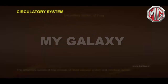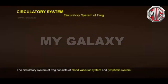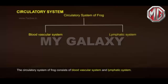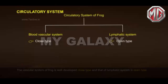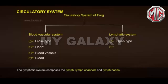Circulatory System: The circulatory system of frog consists of a blood vascular system and a lymphatic system. The vascular system of frog is well-developed and closed-type, while the lymphatic system is open-type. The blood vascular system involves the heart, blood vessels and blood. The lymphatic system comprises the lymph, lymph channels and lymph nodes.